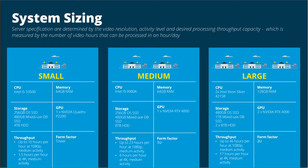Before we dive into example builds, let's talk about throughput. Simply put, throughput is how much video we can process in a given amount of time — like how much video we can process in one hour. Remember that Rapid Review is an after-the-fact forensics tool, not real-time. So throughput is measured in how much we can process per hour. We're not going to size the system based on how many cameras you have, but rather how much video you need to process and in how much time. Each build will have an estimated throughput for reference.